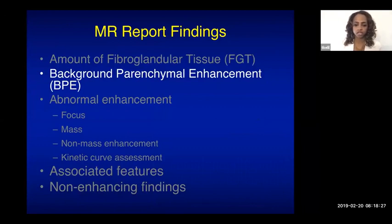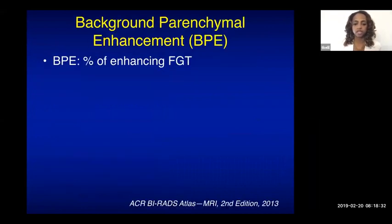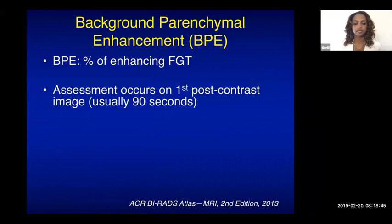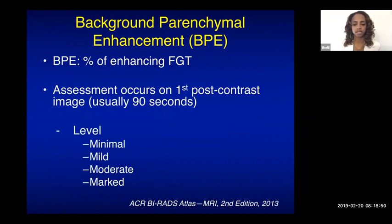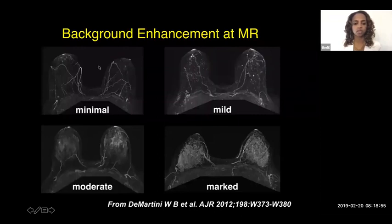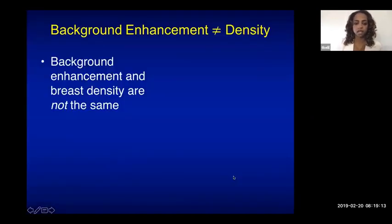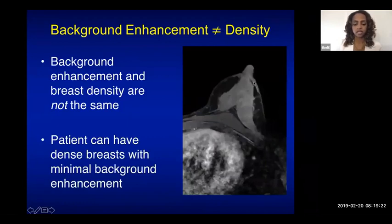Background parenchymal enhancement, or BPE, describes the percentage of enhancing fibroglandular tissue relative to surrounding normal breast parenchyma. Assessment occurs on the first post-contrast image, usually around 90 seconds after contrast injection. Levels are minimal, mild, moderate, and marked. An important point: BPE is not the same as density — you can have extremely dense fibroglandular tissue with minimal background parenchymal enhancement.